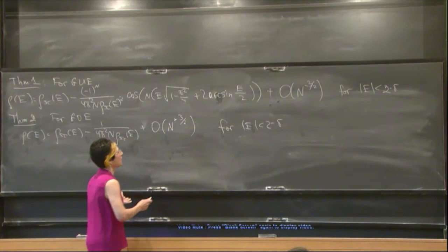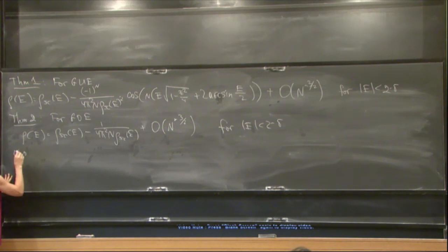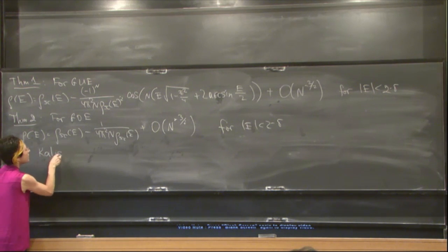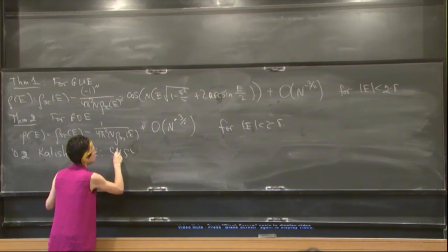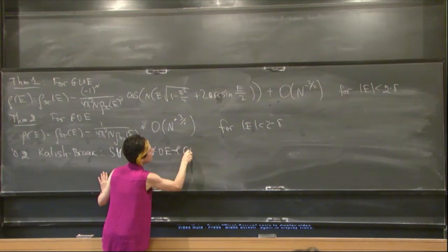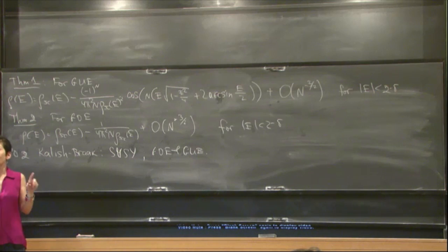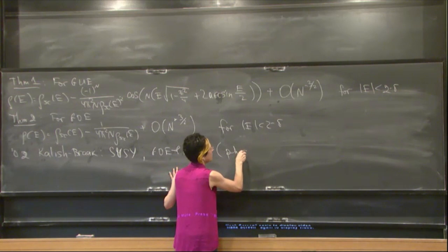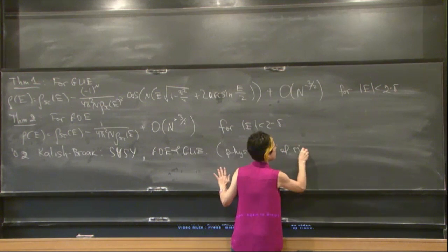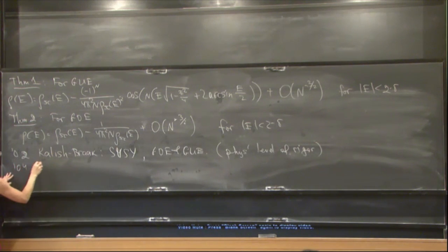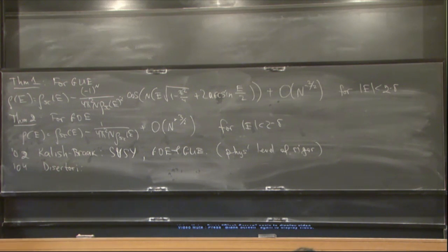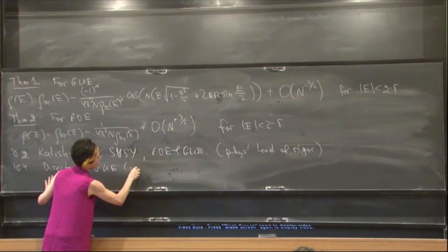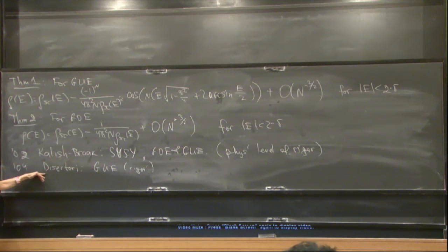In 2002, Kalish and Brock used supersymmetric formulas to derive these formulas for GUE and GOE. Their work, however, was only on the physical level of rigor. In 2004, Margarita Disertori put the GUE part of their work on a rigorous basis. Our work is an extension of her work for the orthogonal ensemble, and we also give a new proof for the unitary ensemble using a different supersymmetric approach.